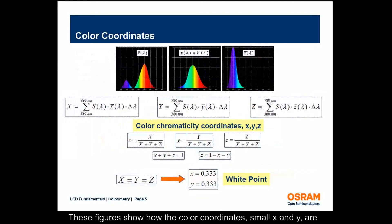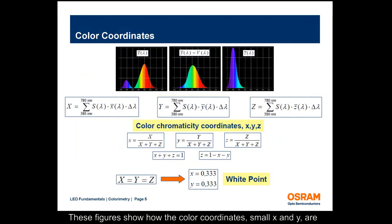These figures show how the color coordinates, small x and y, are calculated from the spectral distribution coefficients, x bar, y bar, and z bar, and the power spectrum, s lambda. Capital X, Y, and Z are called the tristimulus values.